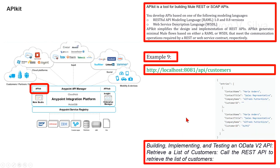Regarding retrieving a list of customers when building, implementing, and testing OData version 2 API: they call the REST API to retrieve the list of customers, and the response is shown as an example.